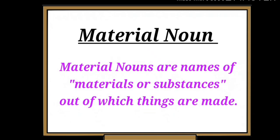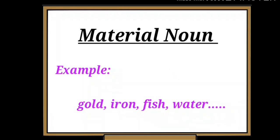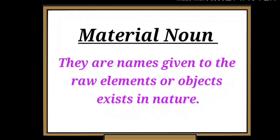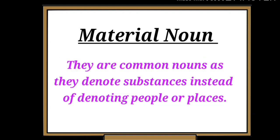Material nouns are names of materials or substances out of which things are made. For example: gold, iron, fish, water, etc. They are names given to the raw elements or objects that exist in nature. We can say that material nouns are common nouns as they denote substances instead of denoting people or places.